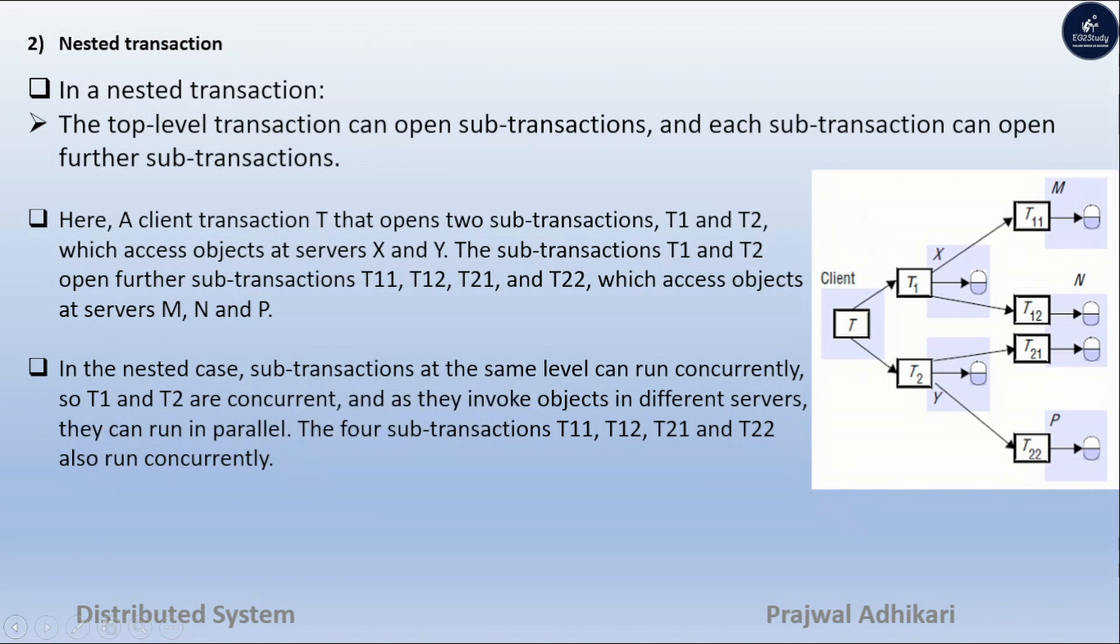In the nested case, sub-transactions at the same level can run concurrently, so T1 and T2 are concurrent, and as they invoke objects in different servers, they can run in parallel. The four sub-transactions T11, T12, T21, and T22 also run concurrently.